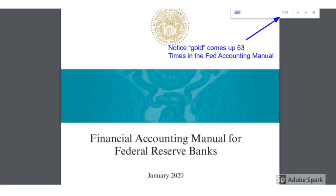A number of subscribers have asked me about the $42.22 per ounce statutory gold price and why it's been maintained since 1973. Let's answer it by looking into the Federal Reserve Accounting Manual. For those who think that gold is not important to the Federal Reserve, I have to point out that the word gold shows up 63 times in this 220-page document — that's more than one mention every four pages.